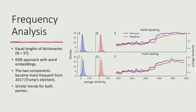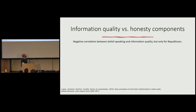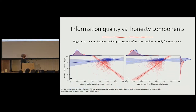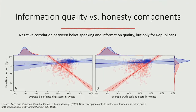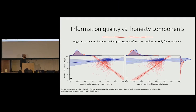More interesting is the relationship we found between information quality — measured using NewsGuard, a fact-checking service — and the two honesty dimensions. Especially for Republicans, there is a negative correlation between belief-speaking in tweets and information quality: the more belief-speaking a tweet is, the lower the quality of information. The opposite is true for the truth-seeking score. Democrats don't seem to show any kind of effect.